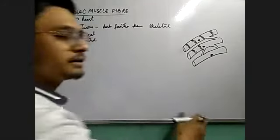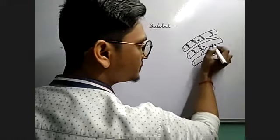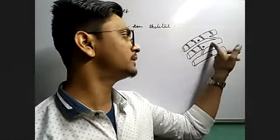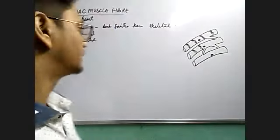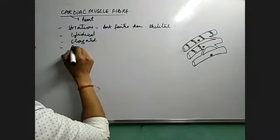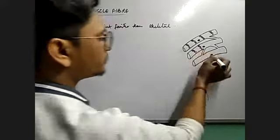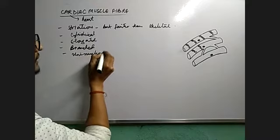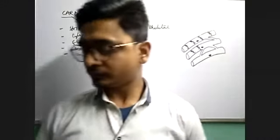Branches - here you can see this is one branch, this is another branch. One muscle fiber is connected to another by the help of a branch. They are branched muscle fibers. How many nucleus? One nucleus each - they are uni-nucleated.